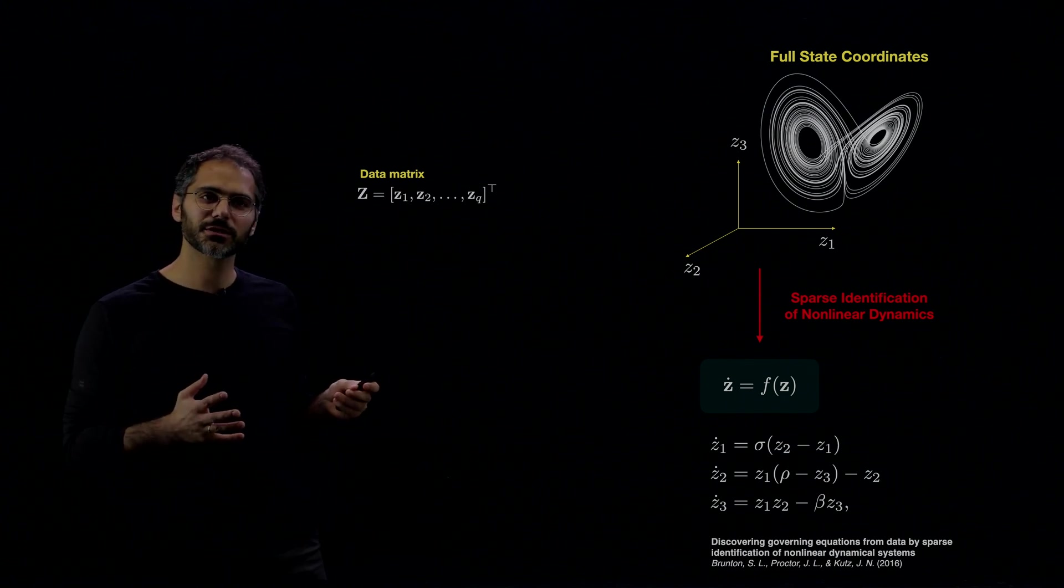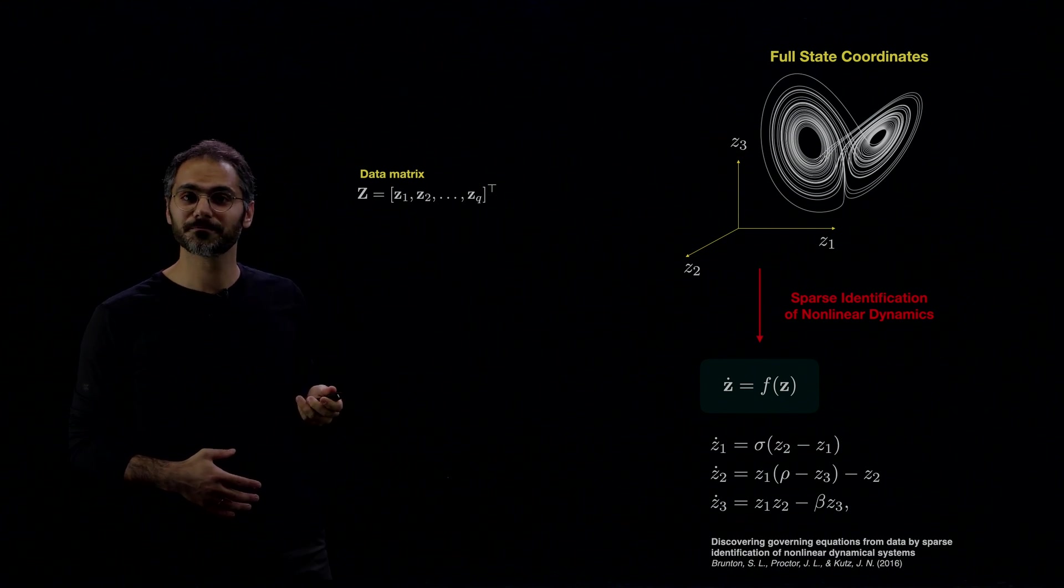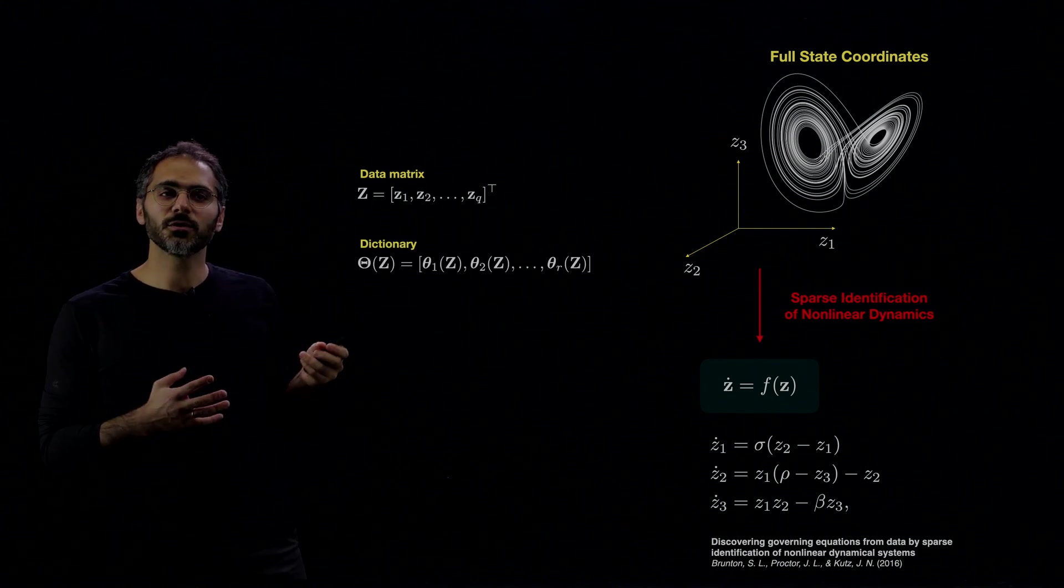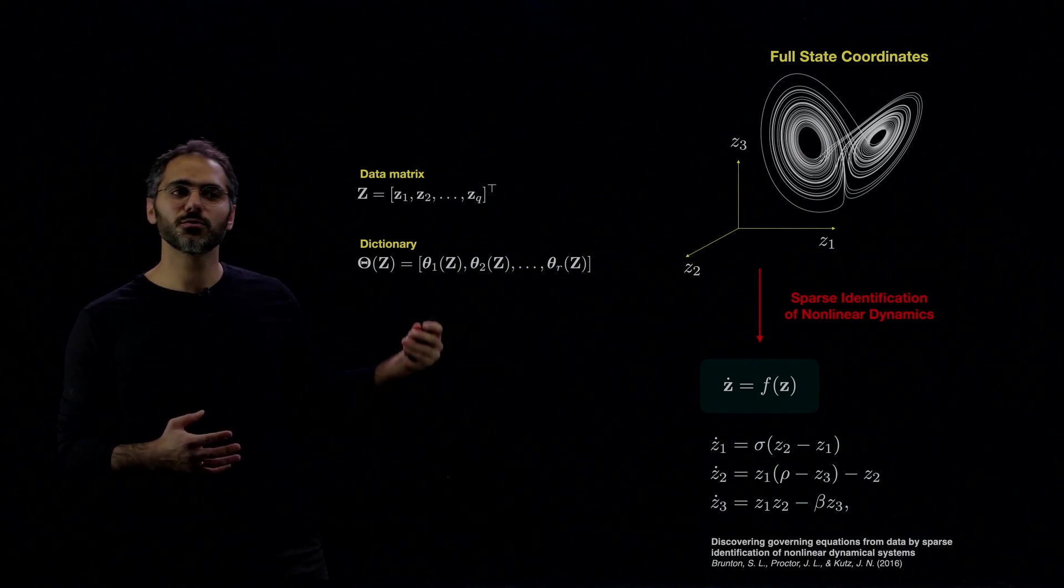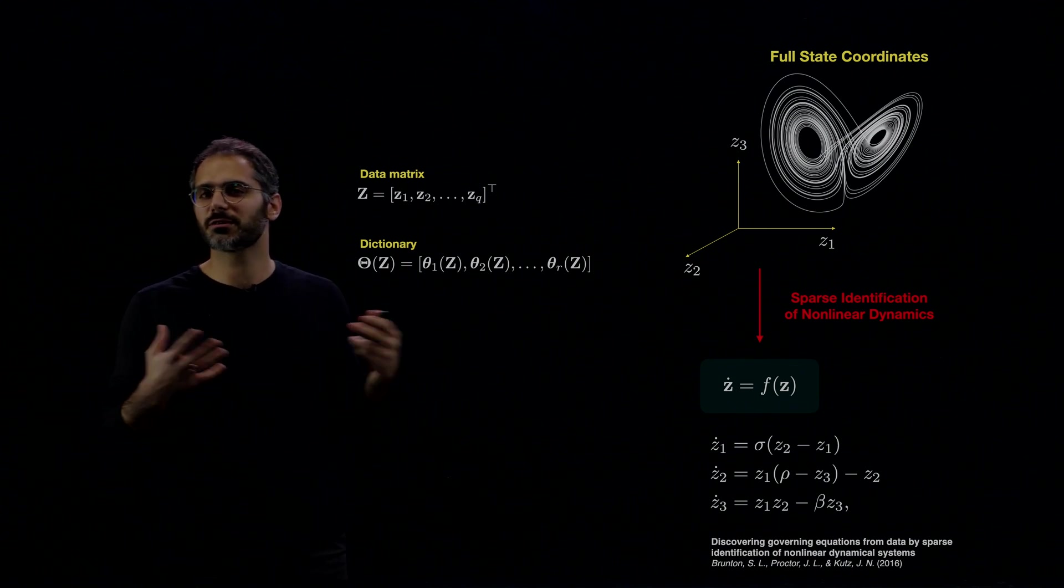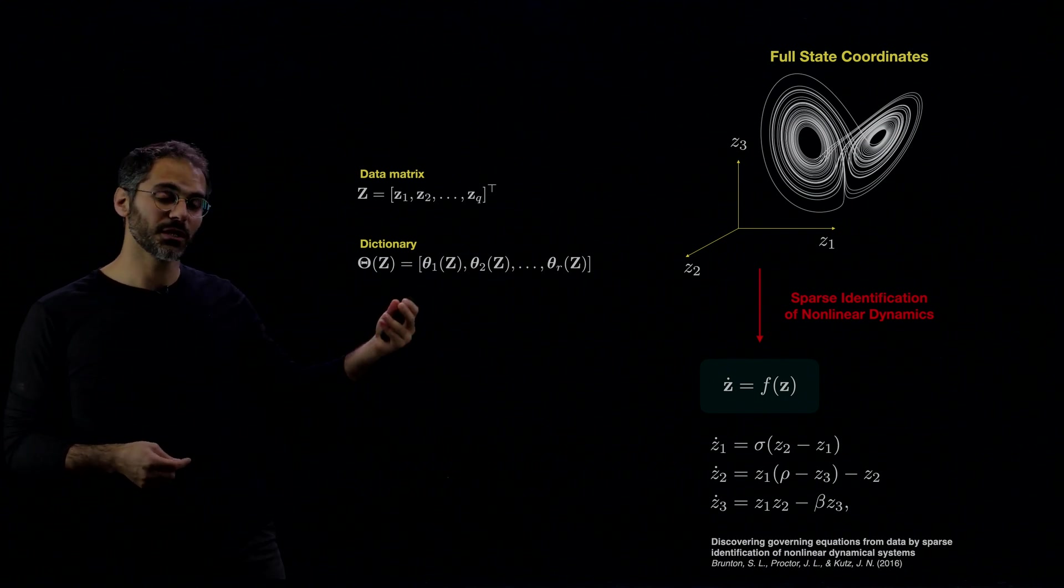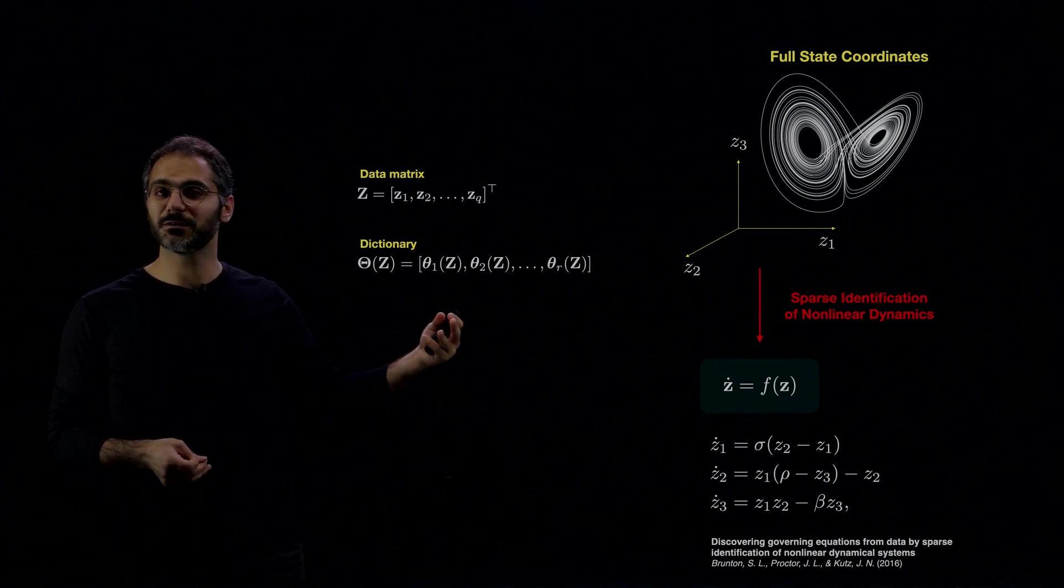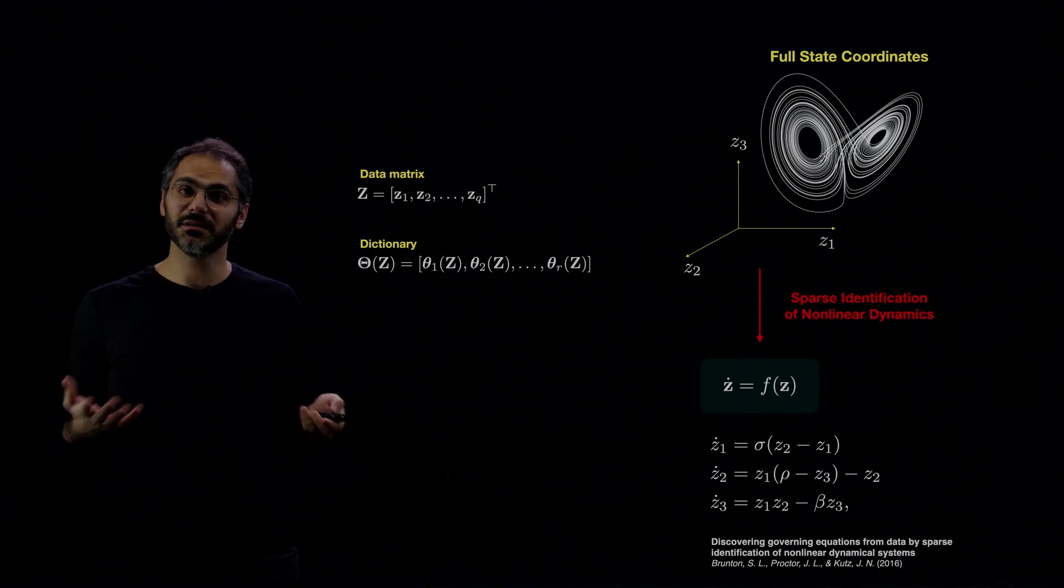So you start with a data matrix, where you have a time series z₁, z₂ to zQ. And you define a dictionary. The dictionary will include z₁, z₂, z₃, z₁ times z₂, z₁ cubed, etc. All these possibilities. You can also have sine of z, and derivatives, and other independent variables, like if you have x, and you can get a PDE, in fact.